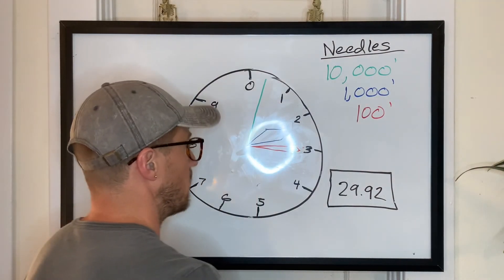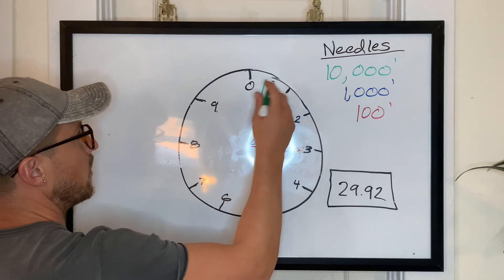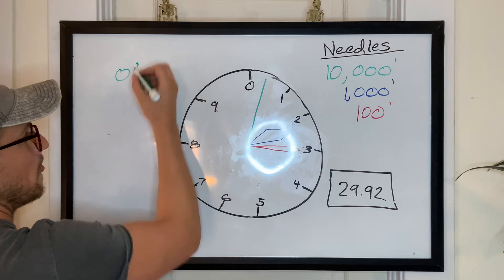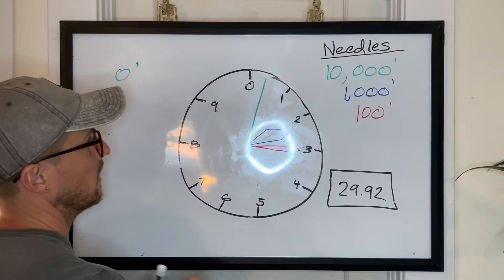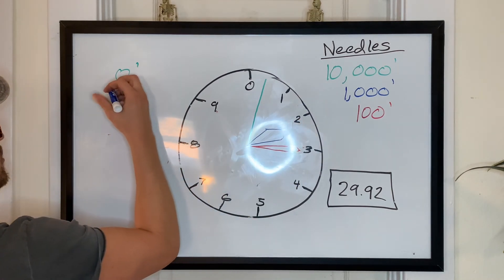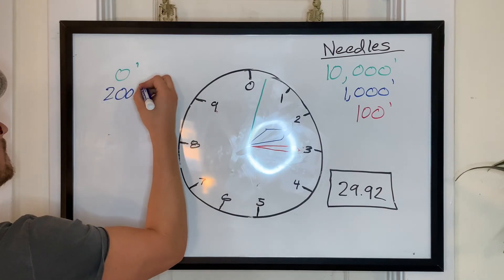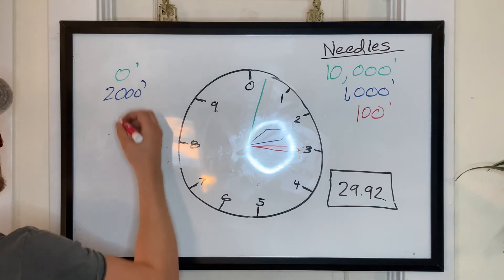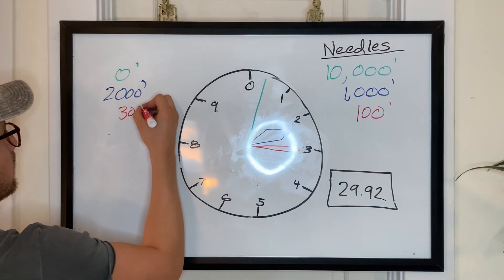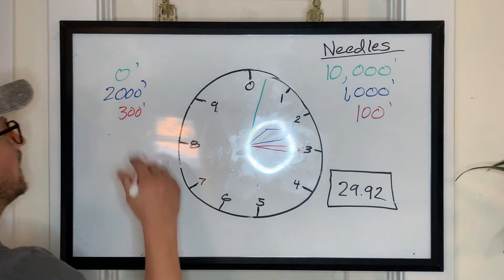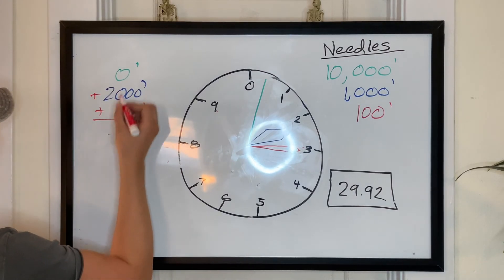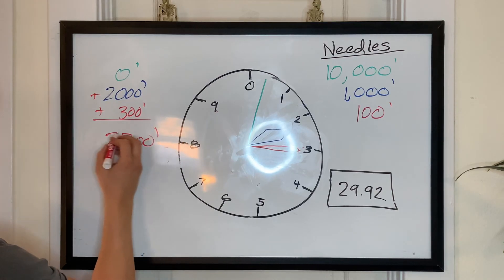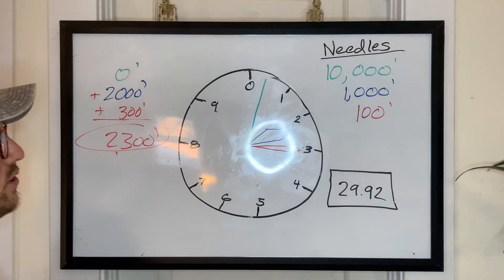And then we do it the precise way where we add this up. So it's above zero. So we have zero for our 10,000 feet. And then it's above 2,000. So we have 2,000 here. And then here, it's right at 300. So we'll write 300 here. And now all we have to do is add them up. 0 plus 2,000 plus 300 is 2,300. So that, again, is how you read an altimeter.